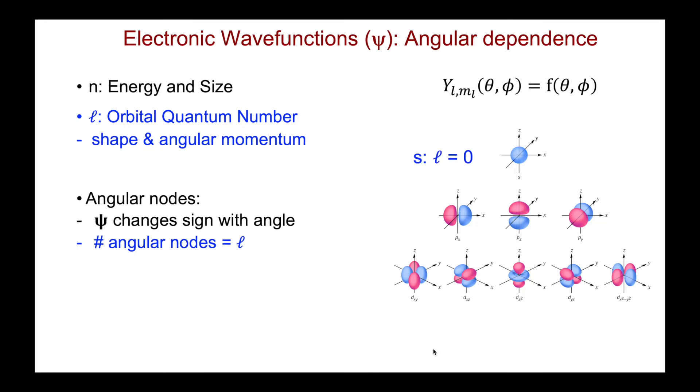So for the s orbital, where l is equal to zero, there are no angular nodes, and the sign of the wave function is the same throughout the orbital. For the p orbitals, with l equals 1, there's one angular node, and across that node, psi changes sign.